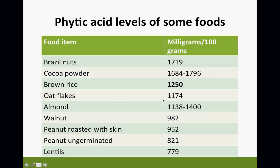Brown rice: 1,250. Oat flakes: 1,174. Think about it — how many of you eat raw oats every day, or cook your oats for five minutes, when Sister White says 'grains used for porridge or mush should have several hours cooking'? Almond is strong — 1,138 to 1,400 — and that's why it says care should be taken not to use too large a portion of nuts. Walnuts are way up there too. Peanut roasted with skin: 952. Peanut ungerminated: 821. Lentils: 779.